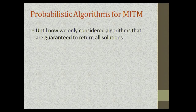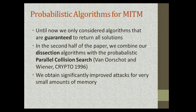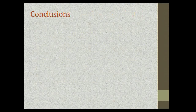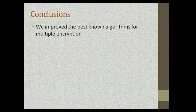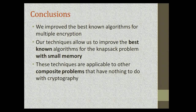Until now we considered only algorithms guaranteed to return all solutions. However, in the second half of the paper, we show how to combine our techniques with a probabilistic algorithm of parallel collision search. Using this combination — which is very involved — we obtain significantly improved attacks where the amount of memory is very small. In conclusion, we improved the best-known algorithms for multiple encryption, and our techniques allow us to improve the best-known algorithm for the famous knapsack problem with a relatively small amount of memory. The techniques are also applicable to other composite problems unrelated to cryptography.